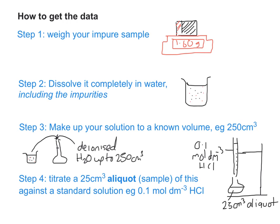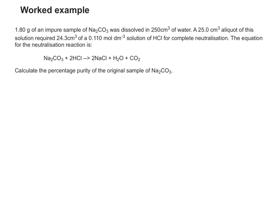So let's do a worked example. This would be a typical A-level style question asking you to use a titration to work out the percentage of purity. 1.80 g of impure Na2CO3 was dissolved in 250 cm³ of water. A 25.0 cm³ aliquot of this solution requires 24.3 cm³ of 0.110 molar solution of HCl for complete neutralisation.